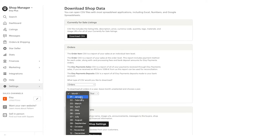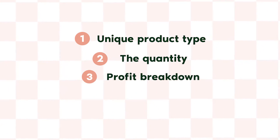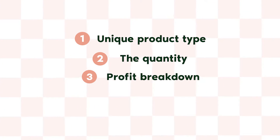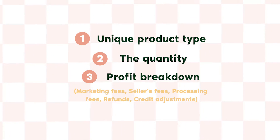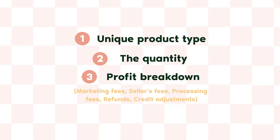You kind of have to reverse engineer it yourself to really figure out what each column is representing, and I know that from experience. Basically, if this is how you wanted to go about calculating your true metrics for your shop, you're going to have to download a bunch of these reports to figure out things like all the unique product types you've sold, the quantity sold, the exact profit breakdown of all those unique sales, things like your marketing fees, seller fees, processing fees, refunds, credits, and adjustments. All of those exist in these reports somewhere, but it's really difficult to pull it out and make it something meaningful for your store.